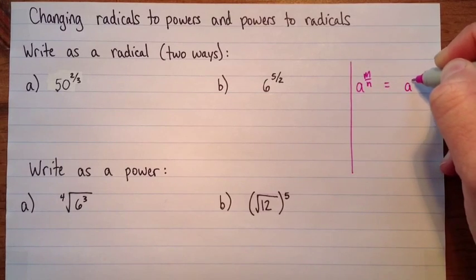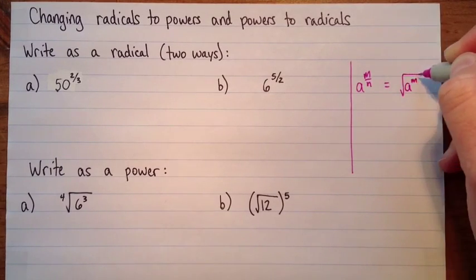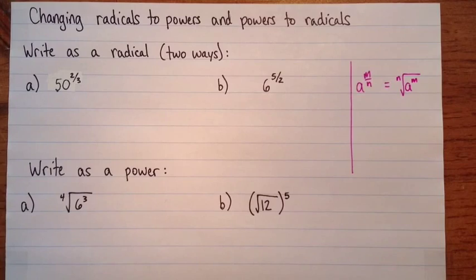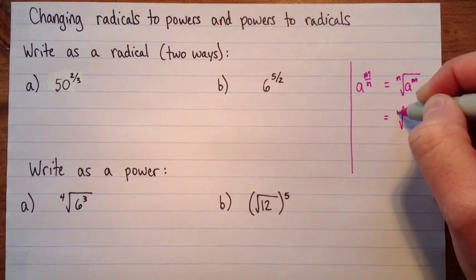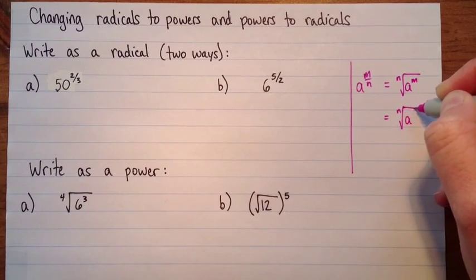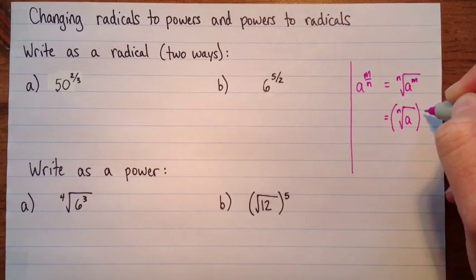We can either do first a to the m, and then do the nth root. Or, we can do the nth root first, the nth root of a, and then raise that to the exponent m.